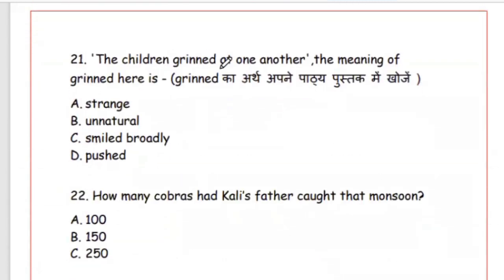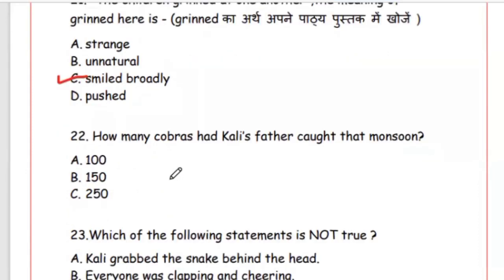Question 21: 'The children greened at one another.' The meaning of 'greened' here is — strange, unnatural, smiled broadly, or pushed. The right answer is C, smiled broadly — khulkar muskurana. Question 22: How many cobras had Kali's father caught that monsoon? The answer is Option A, hundred.